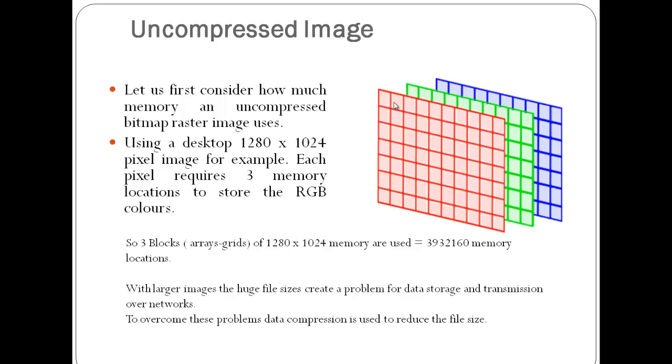Suppose I have an image of 1280x1024 size. What is the kind of memory being used? For a colored image, I have three planes: R, G, B. For such a colored image, I would need these many memory locations.